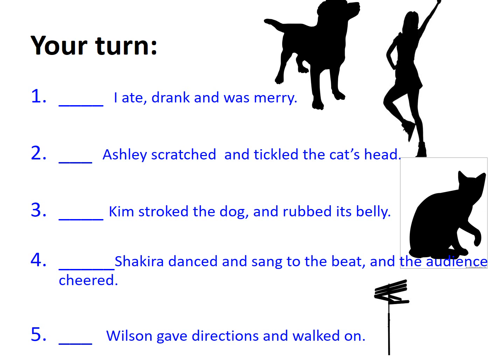So how did you do? 'I ate, drank, and was merry.' Good for you — I'm listing the verbs that include the things I did: I ate, I drank, and I was merry. So the use of the comma here is as if in a list. I have three items and I put a comma between the first and the second, and use 'and' between the second and the third. So yes, this is absolutely correct.